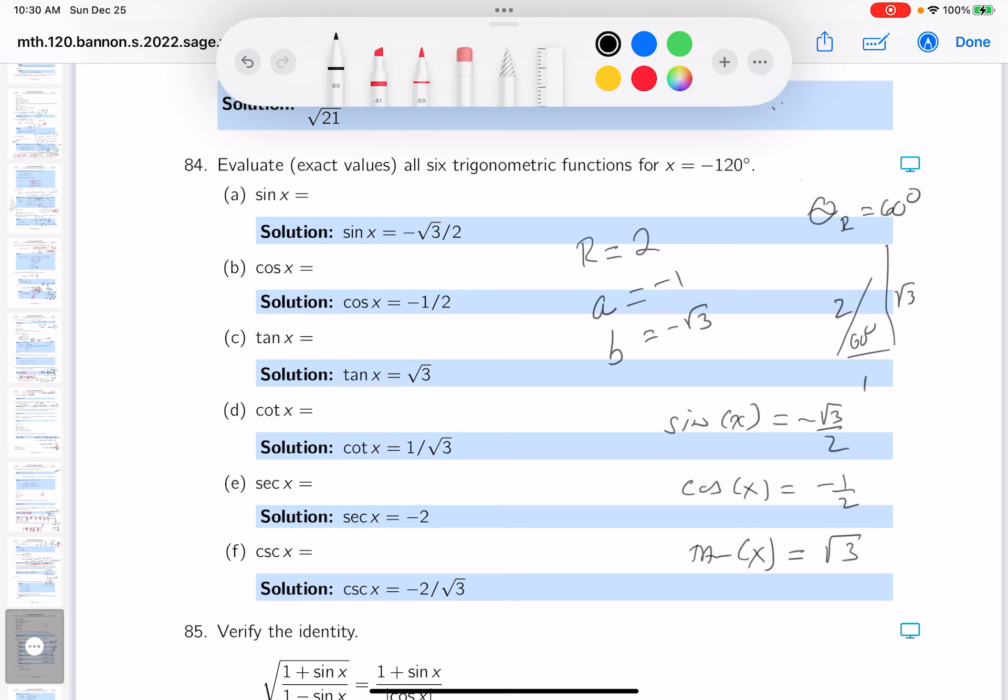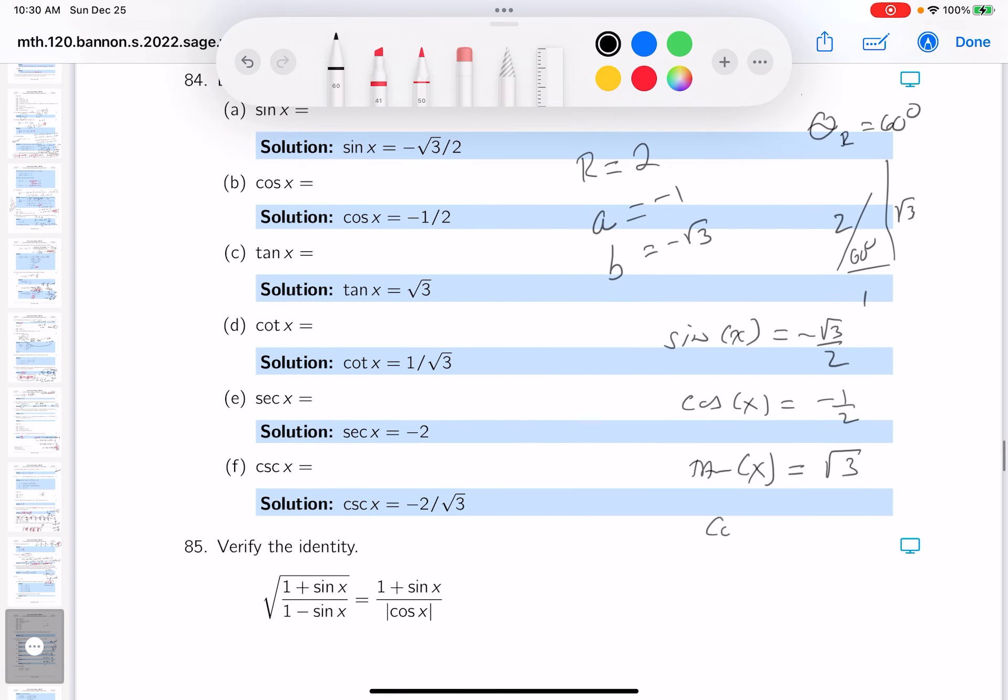And then the reciprocal functions. They want to put those down as well, like the cotangent of X. That's going to be 1 over root 3. If you want to rationalize that, that would be root 3 over 3. Let's see the secant of X. I can write that down.